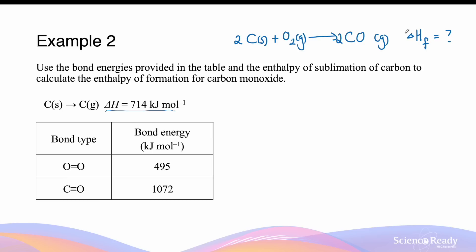To find the enthalpy of formation, let's consider the energy processes that will occur to transform these two reactants into the product. The first thing that must occur is the sublimation of carbon — carbon going to carbon gas. The reason is that the carbon in the product is in a gaseous molecular state, while originally the carbon is in a solid state.